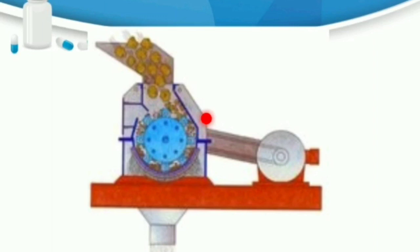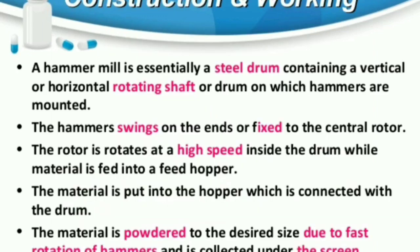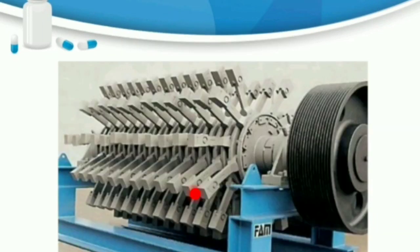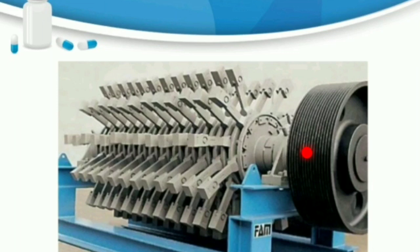The uses of the hammer mill: it is used for milling dry materials, wet filter press cakes, ointments, and slurries. For brittle materials, blunt hammers are used because brittle material breaks easily. For fibrous materials, cutting edges — that is, hammer blades — are used for cutting, so they act as a knife.